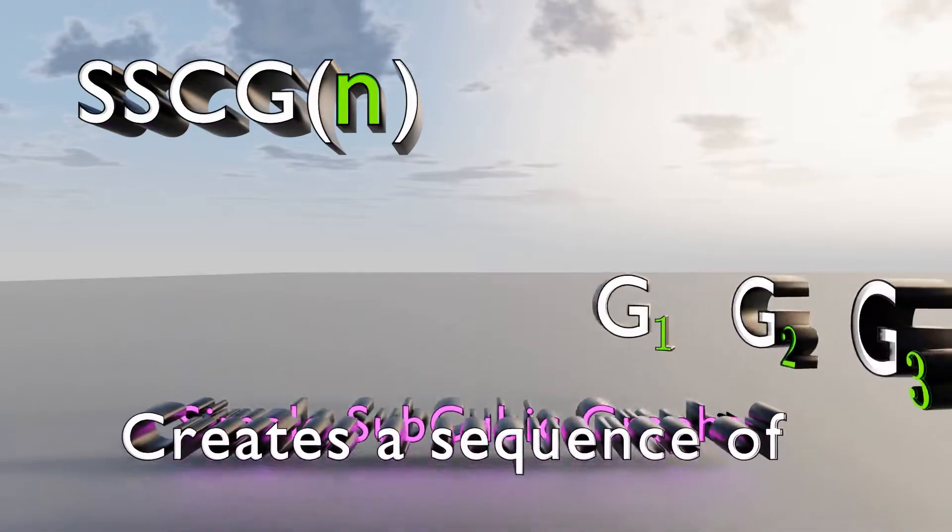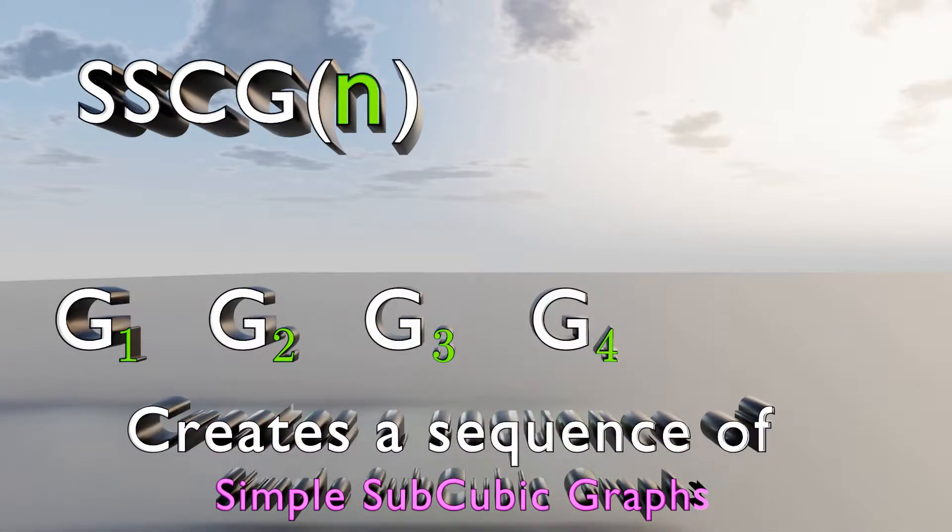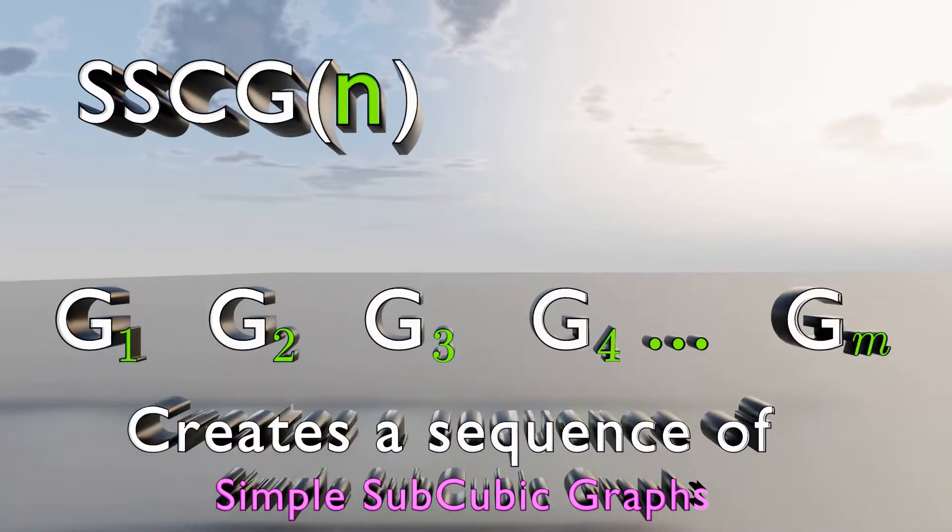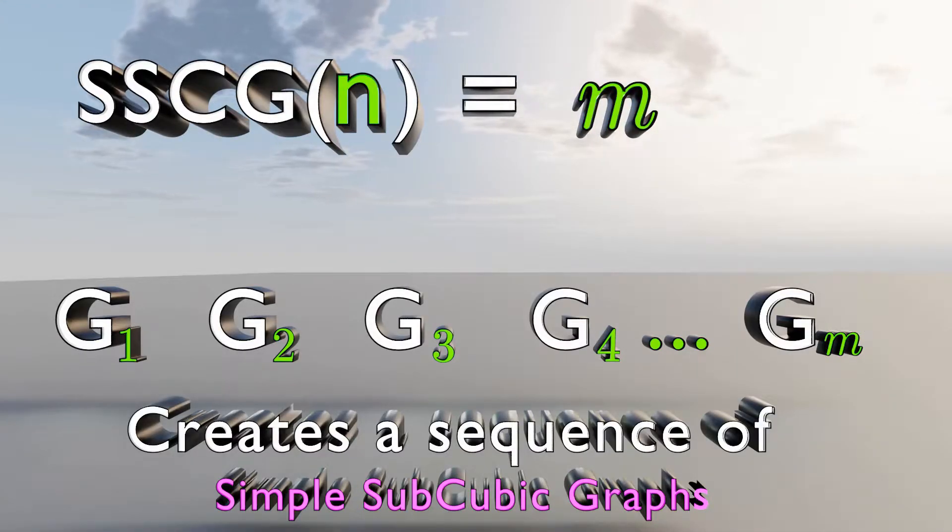The sequence looks like this. It goes from graph number 1 all the way to graph number M. M is the value of SSCGN.